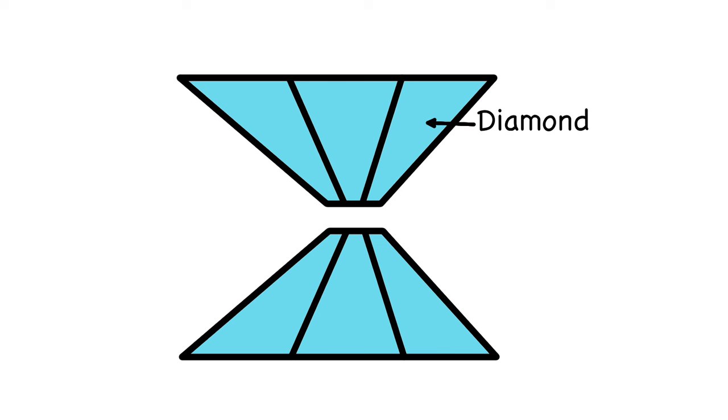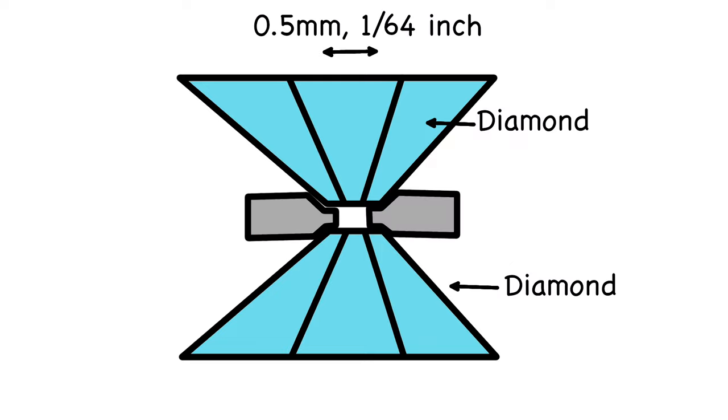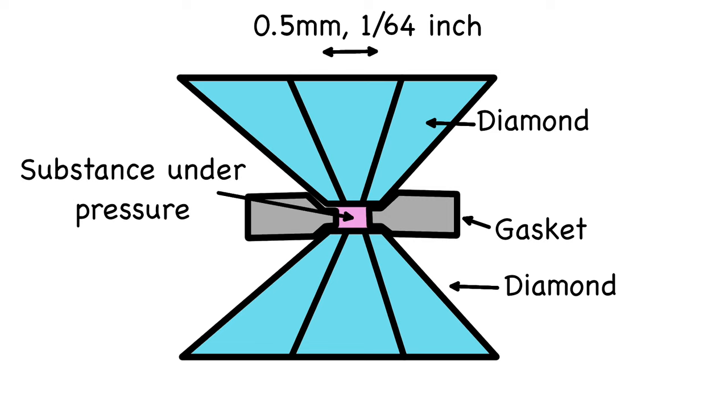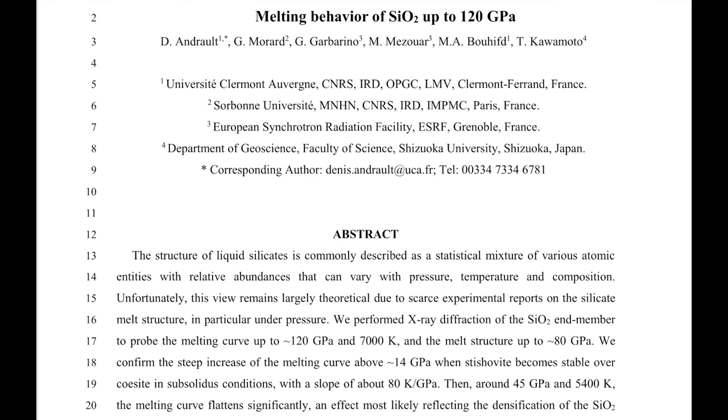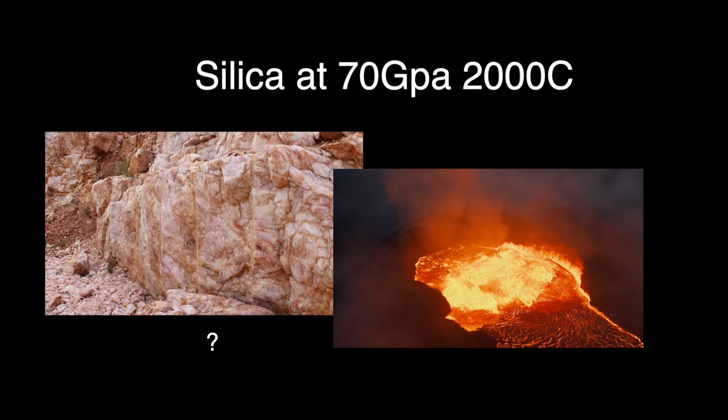A diamond anvil cell uses two tiny diamonds to generate pressures of hundreds of gigapascals. This lets us reproduce the conditions found thousands of miles deep into the earth. We can take the data from Andrault et al. and plot a phase diagram. This will help us to see whether silica really will be fluid under our conditions.